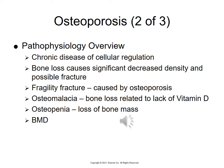Osteopenia is present when the T-score is a negative one and above a negative 2.5. Osteoporosis is diagnosed when the T-score is at or lower than negative 2.5, and at that point they will be treated with bisphosphonates. Medicare reimburses for BMD testing every two years in people 65 and older.